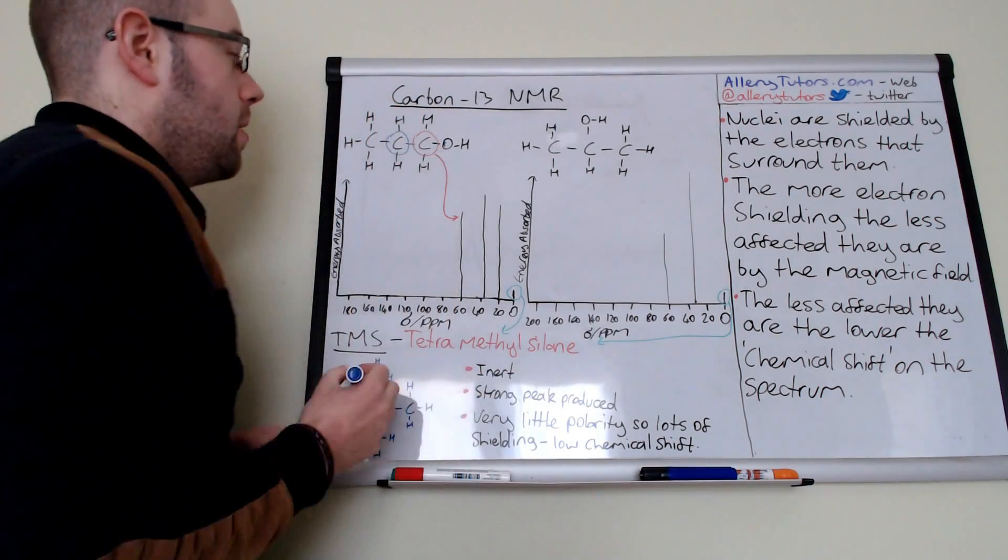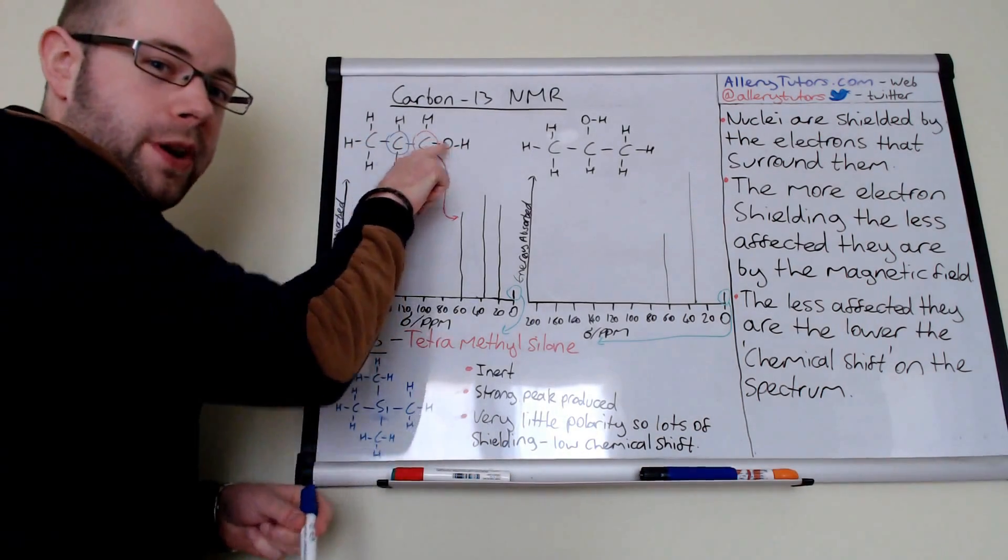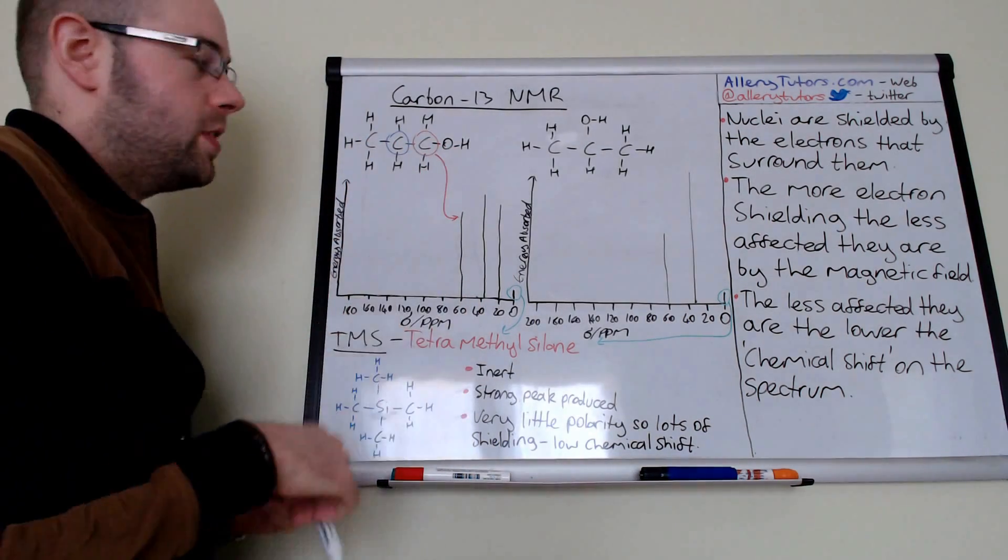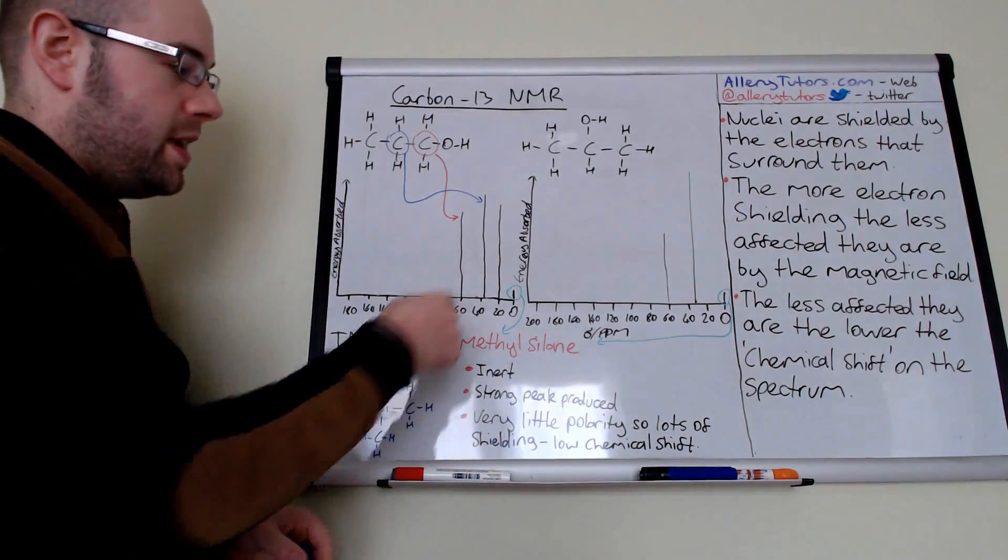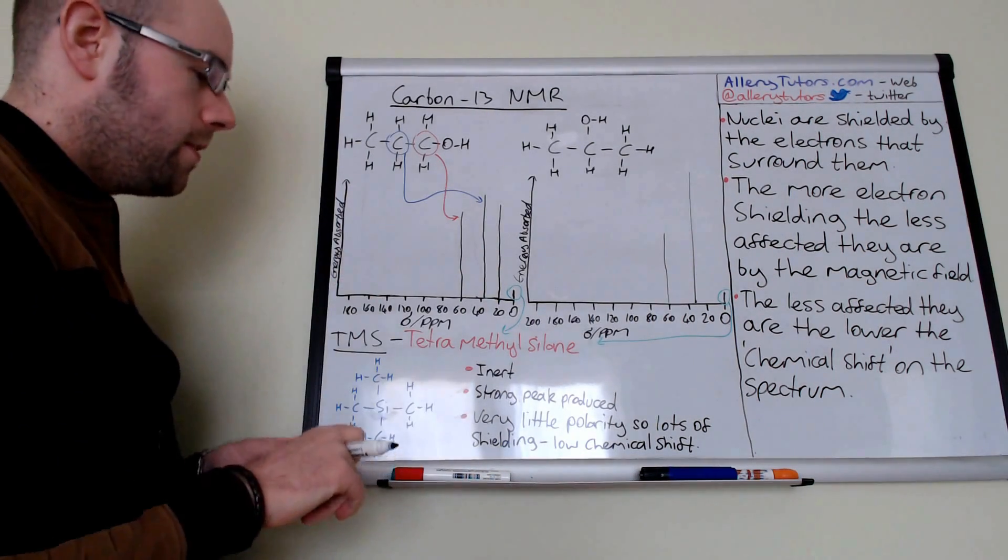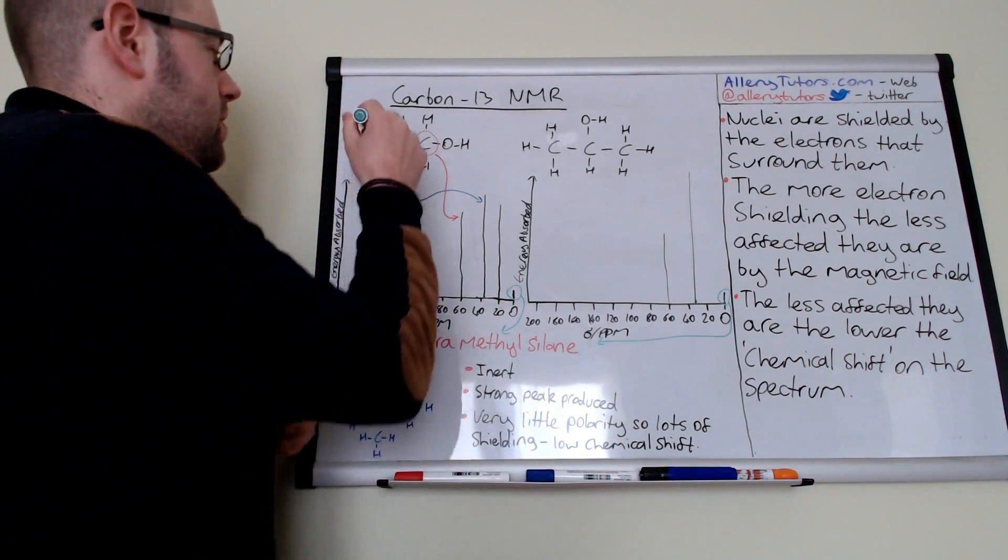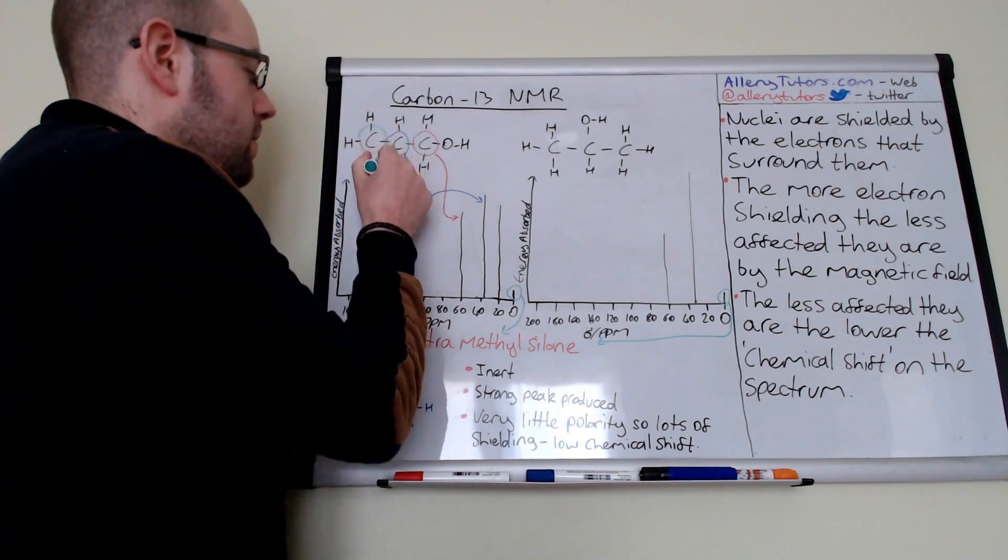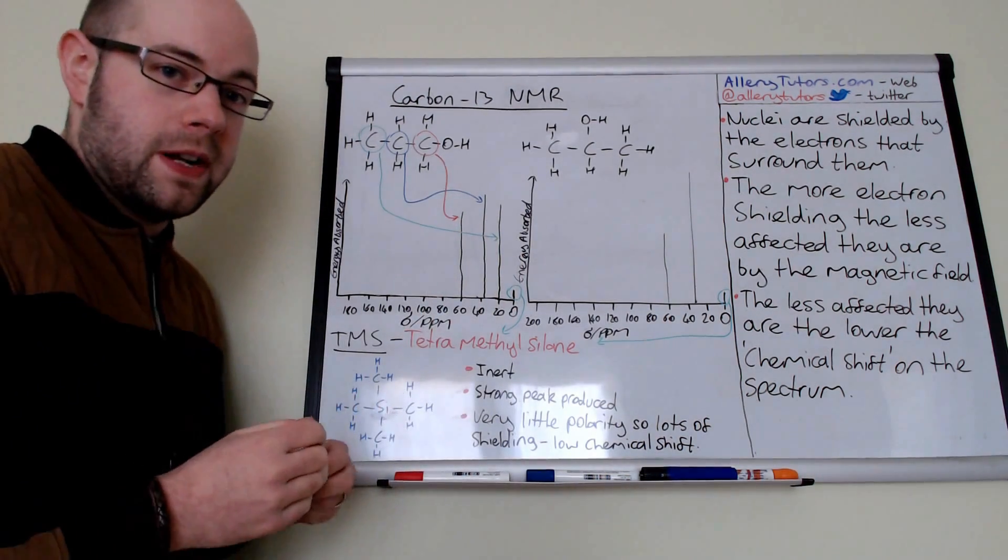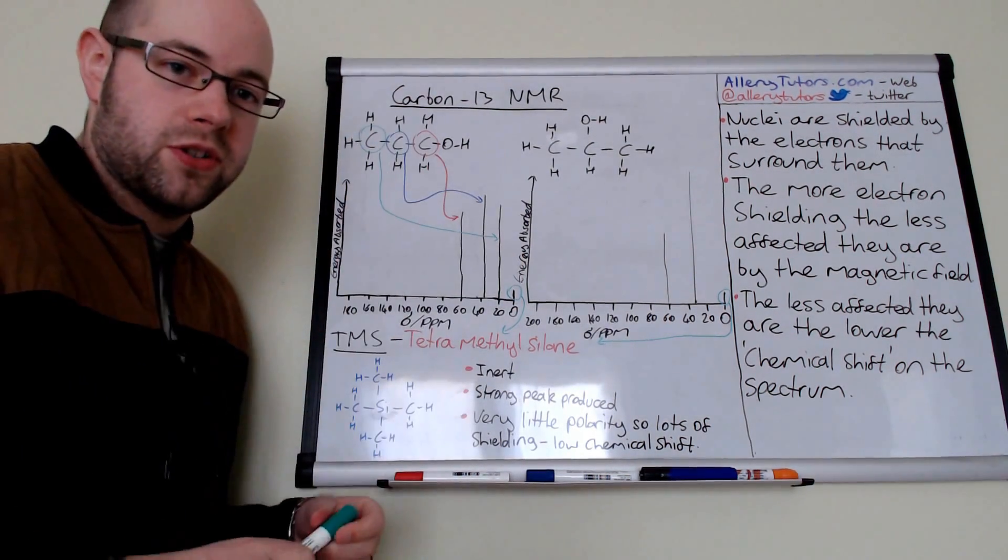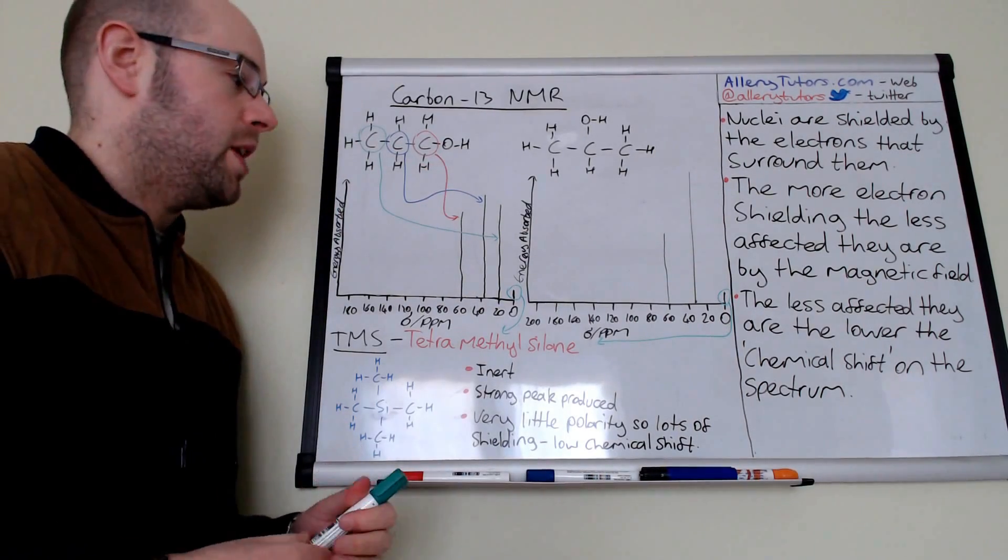If we look at the next carbon along, you can see this carbon, carbon number two. This one is a little bit further away from the OH, so it won't be shifted as much because it'll have plenty of shielding. So this one is going to be attributed to this second peak here, so the next one that's shifted along. And then if we obviously look at the last one, there's only one peak left, which is this one here. This one is going to be attributed to that peak. Because it's shifted very little, it's the furthest away from the oxygen, so it's not influenced as much. But you can see we have three different carbon environments. We also have a peak here at zero, which is TMS, which I'll come on to in a minute.